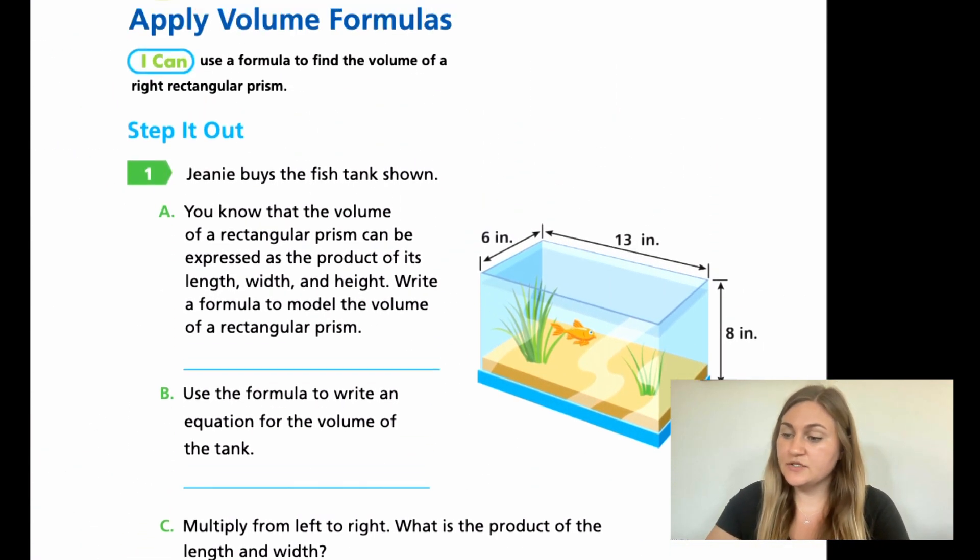Jumping into the lesson on page 113. On the Step It Out question number 1, it says Jeannie buys the fish tank shown. For A, you know that the volume of a rectangular prism can be expressed as the product of its length, width, and height. Write a formula to model the volume of a right rectangular prism.